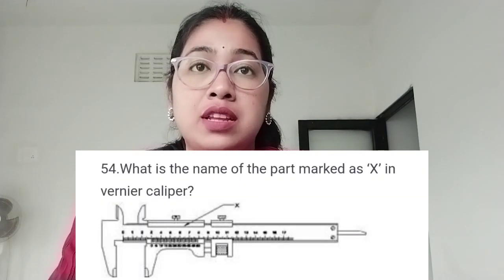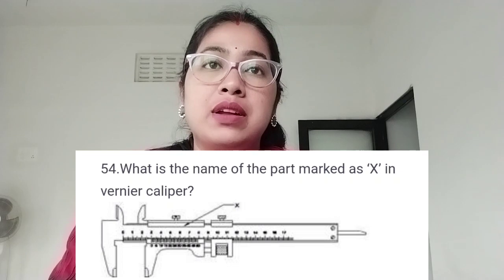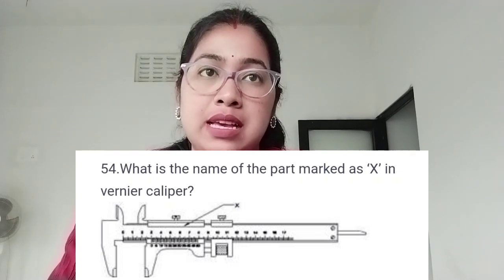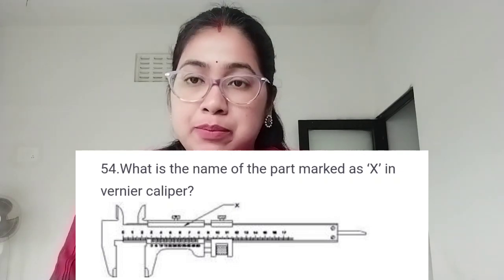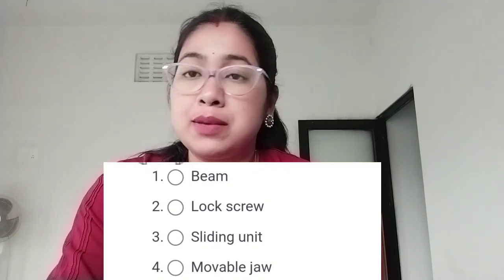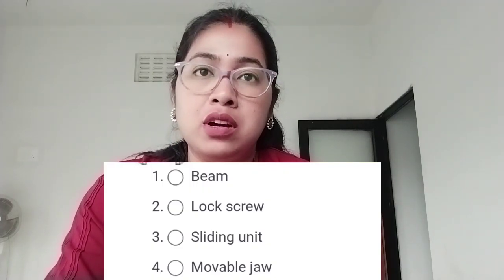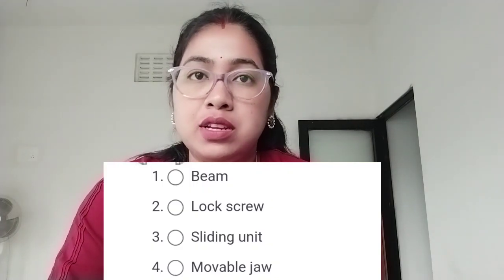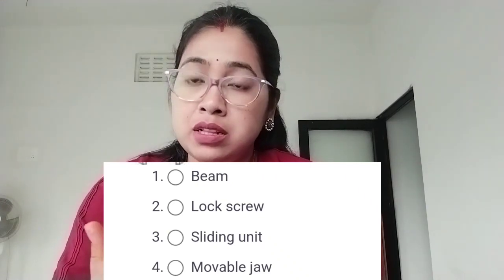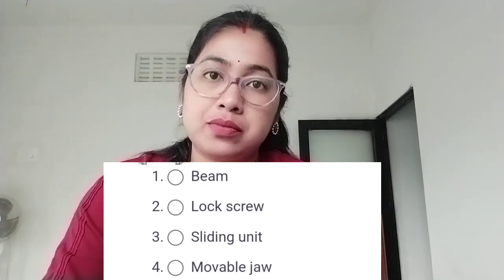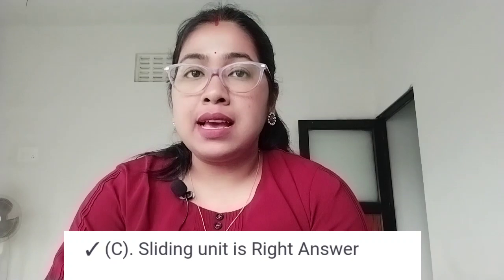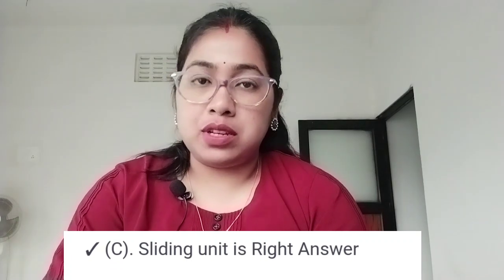Next question: what is the name of the part marked as X in the vernier caliper? Option 1: beam. Option 2: lock screw. Option 3: sliding unit. Option 4: movable jaw. The correct answer is option C, sliding unit.